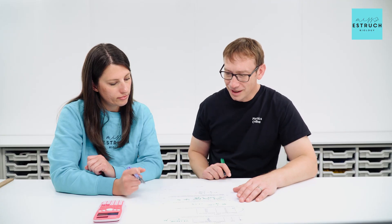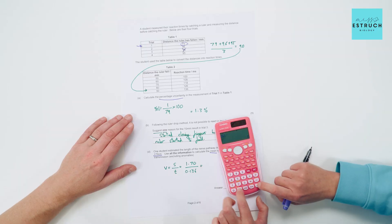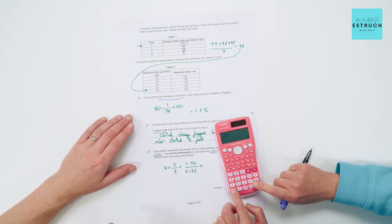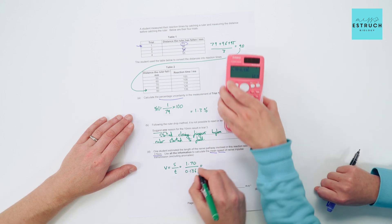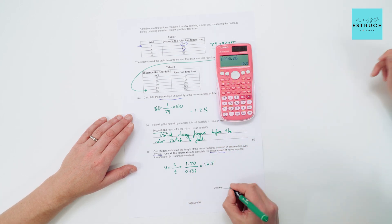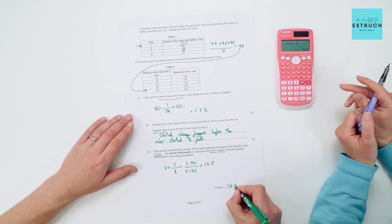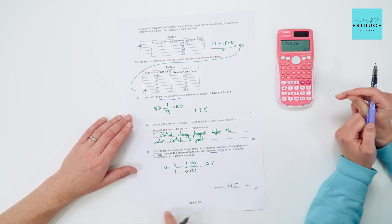So 1.70 meters divided by 0.136 seconds equals 12.5 meters per second — and that's the mean speed of nerve impulse transmission.